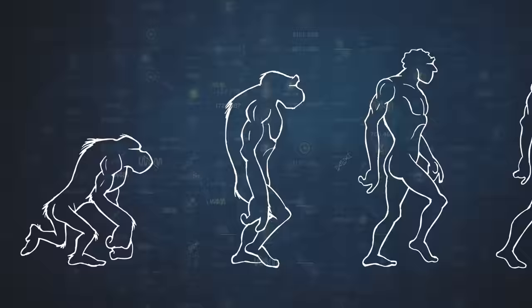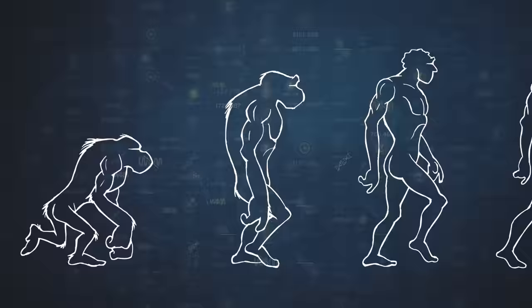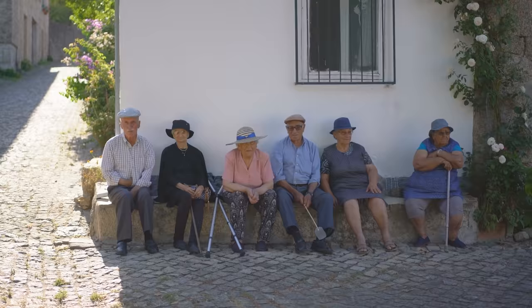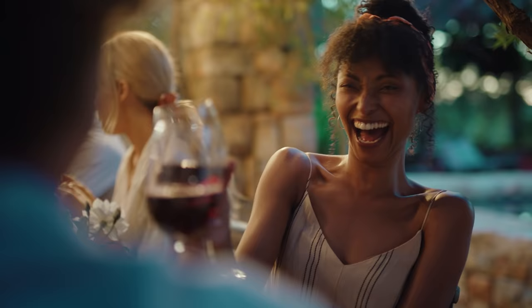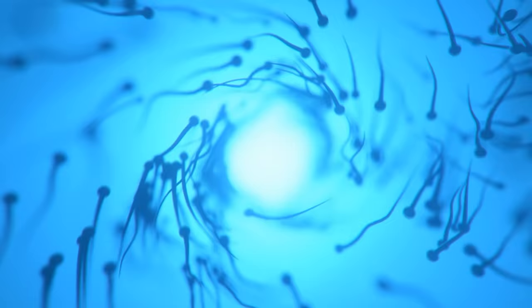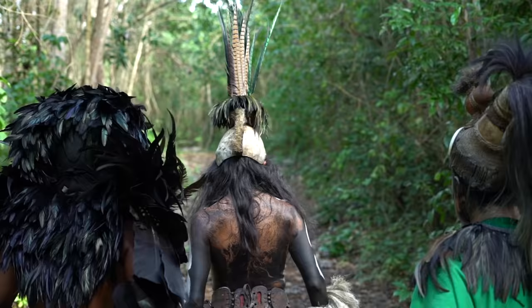In order to understand aging, we need to understand that we are the product of evolution, and not of intelligent design. The reason we age and die is not because aging and dying serve a purpose. If anything, in terms of biological purpose, staying young and living longer should give more chance to reproduce. But in evolution, the probability of external factors also plays a role.